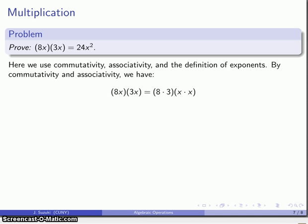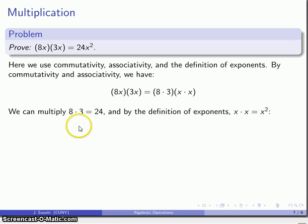So let's go ahead and write that down. By commutativity and associativity, I can rearrange the factors any way that I want to. This is 8 times x, this is 3 times x, so I can rearrange this: 8 times 3, x times x. And commutativity and associativity allows me to do this, and I can multiply.